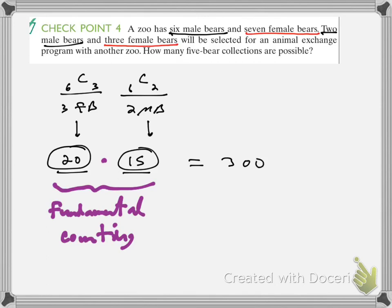Which means I multiply those two results because I have two categories. I find how many choices are in each category and then multiply those choices to get the total number of possibilities. So this would be 20 times 15, which is 300. There are 300 total possible combinations — the key in this word problem is recognizing there are two categories, then applying the fundamental counting principle.